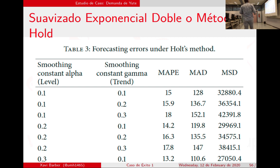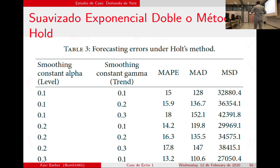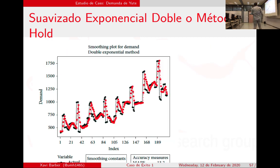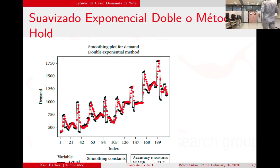El método de Holt: yo elijo la pendiente y elijo el alfa. Nuestra tabla podría ser tan grande como quisiéramos.